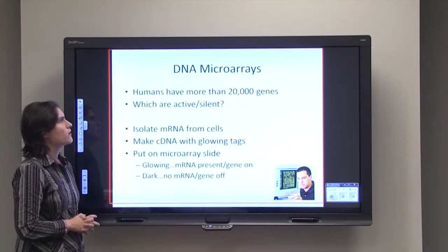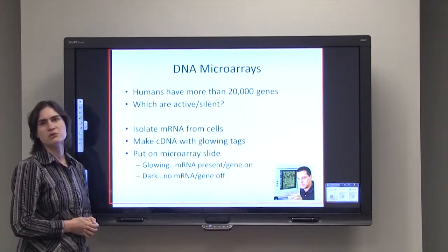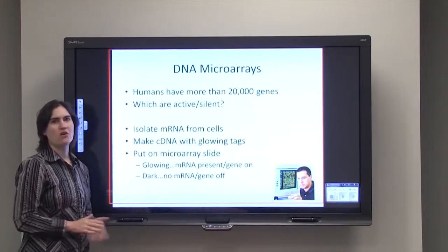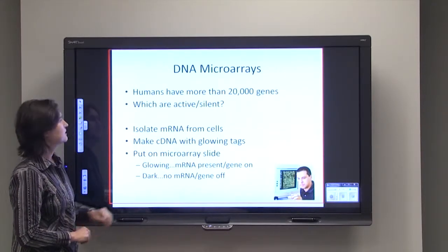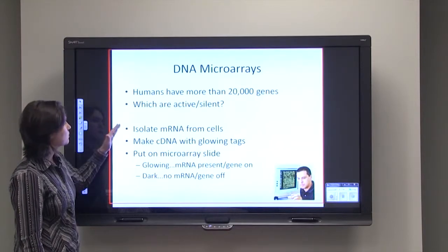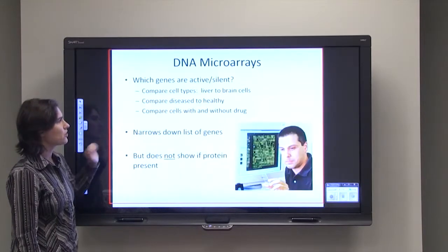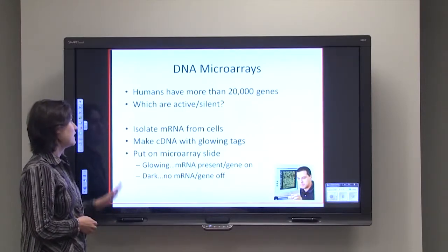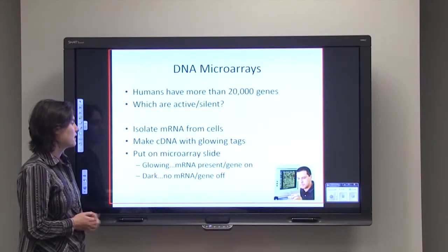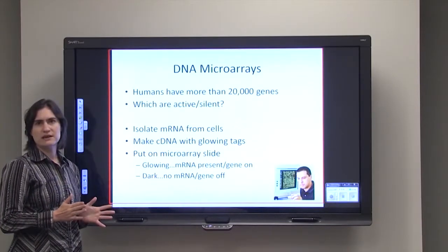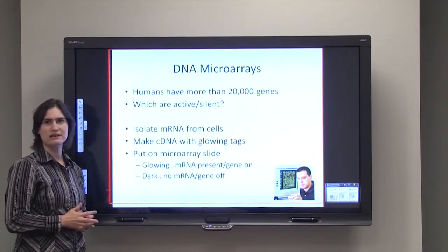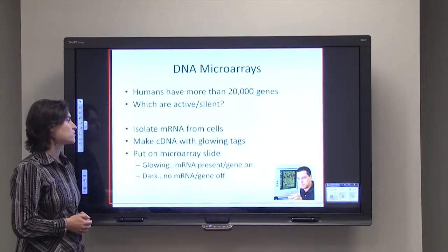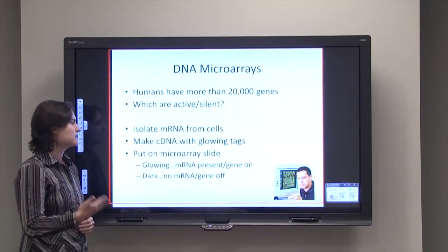Microarrays are one way that we can determine which genes are active and which genes are silent. In humans we've got 20,000 genes that might be on or might be off. Using a DNA microarray, we start by isolating messenger RNA from cells, make cDNA with a glowing tag, and put it on a microarray slide. Wherever there's a glowing dot, that indicates the messenger RNA is present and the gene is turned on; wherever it's dark or black, the gene is off.